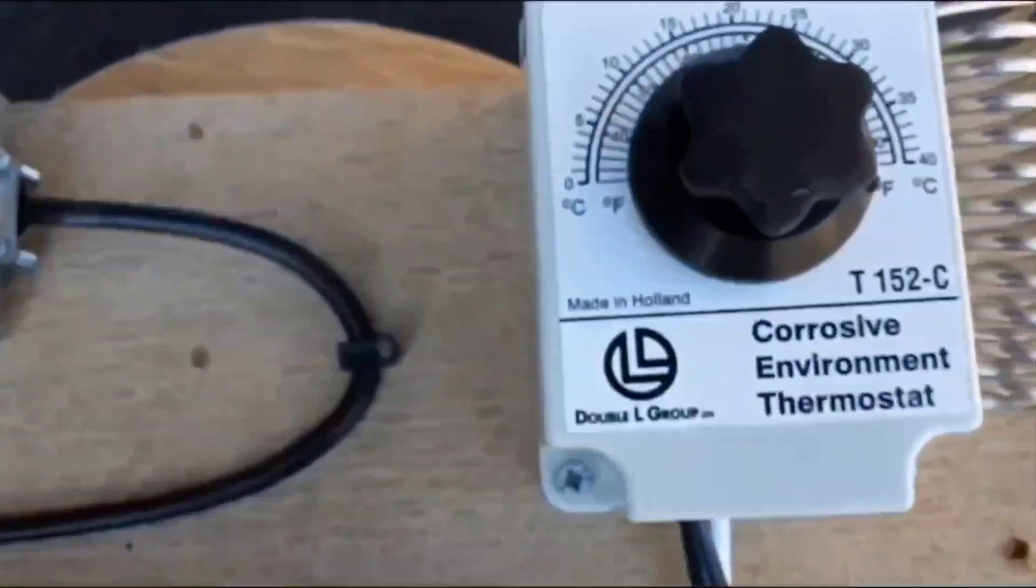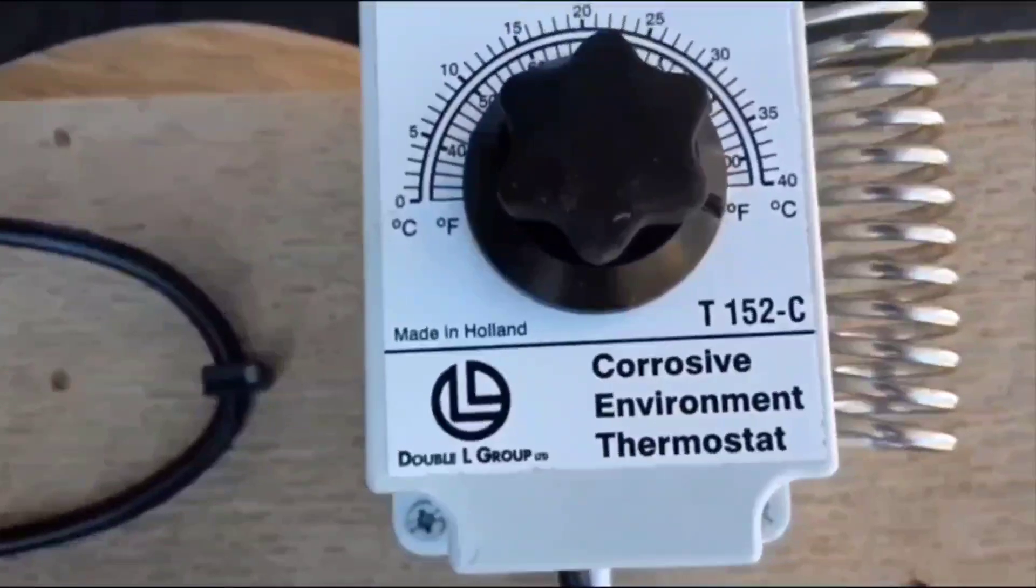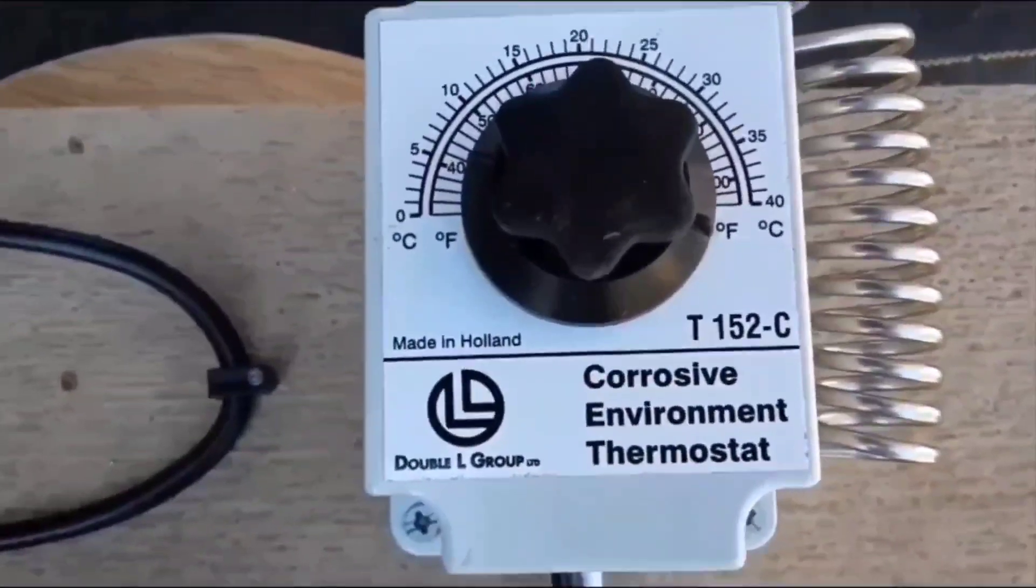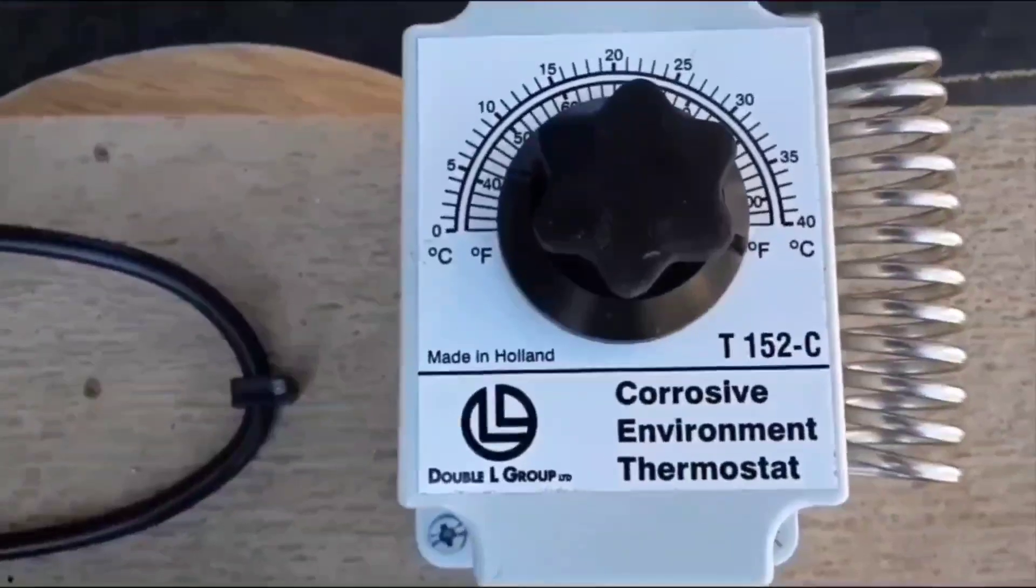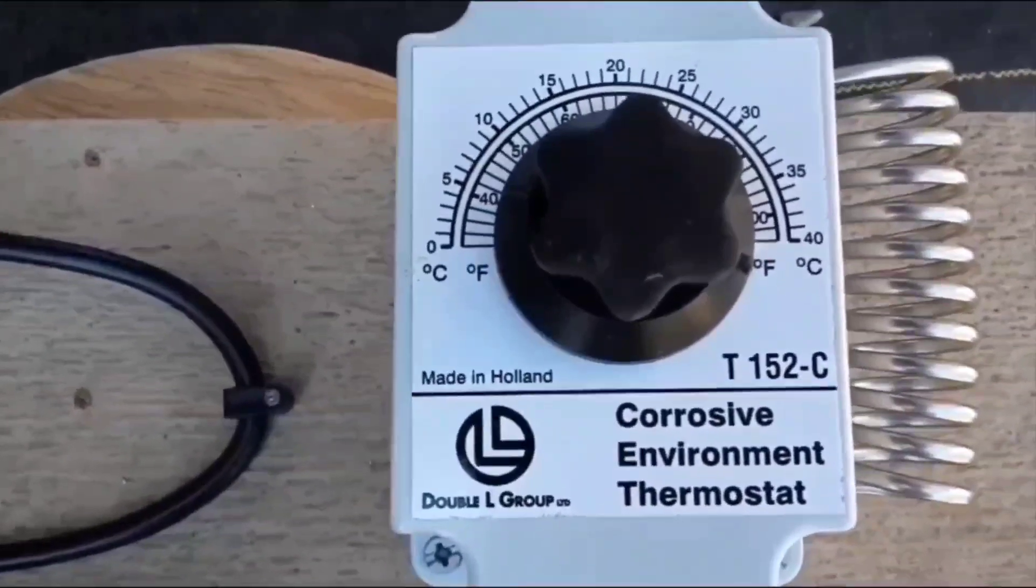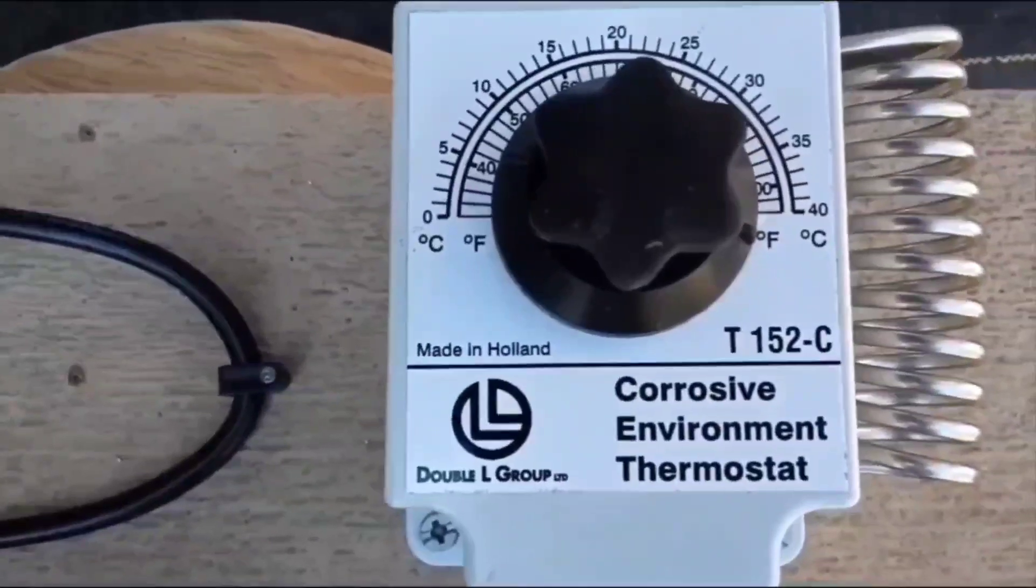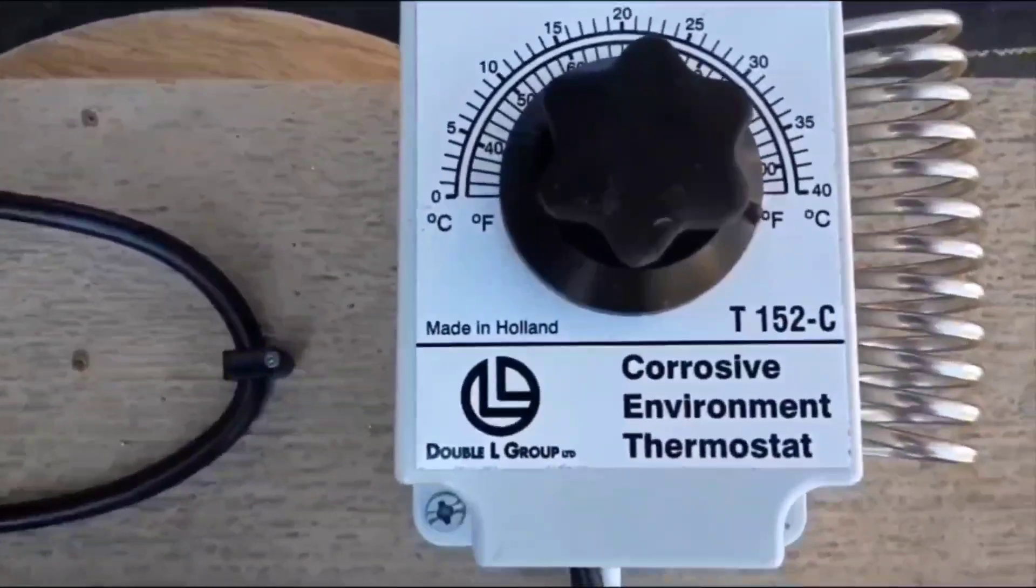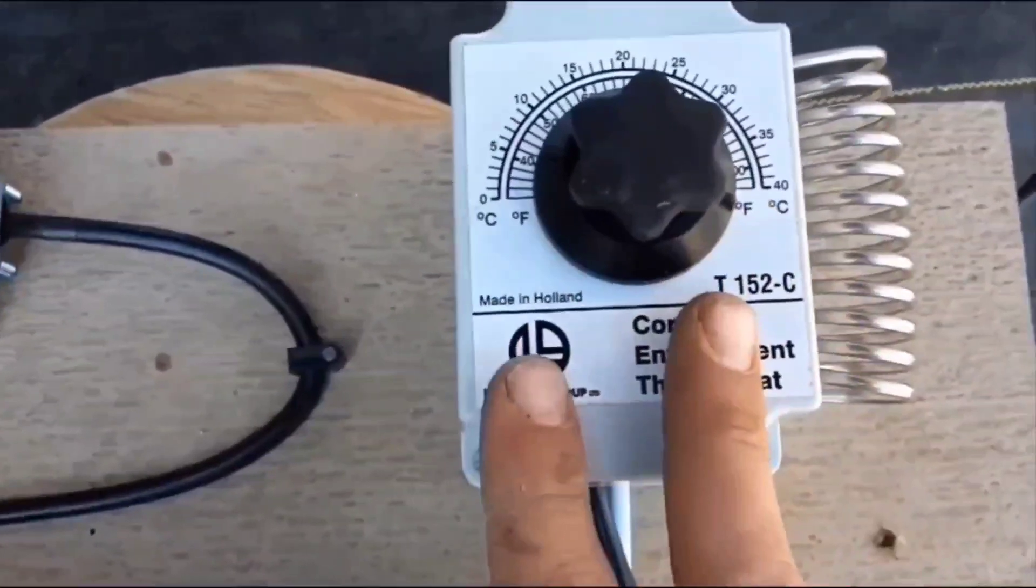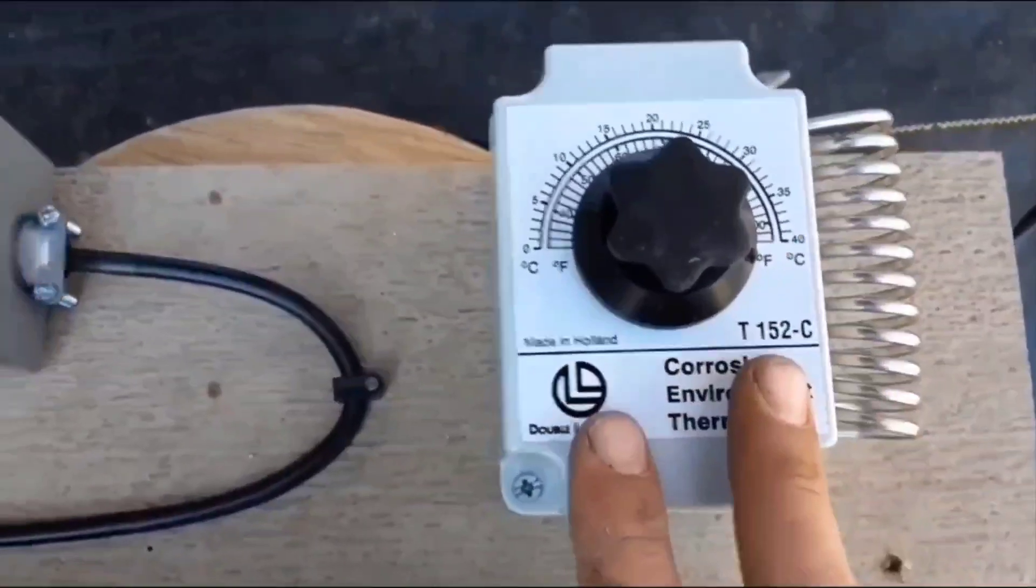For my temperature controller, using a double L group T152-C. It's a single throw, double pull, or single pull, double throw, there we go, thermostat. So it'll actually switch the positive and negative so we can reverse the polarity. I'll show you the inside of that here in a second.